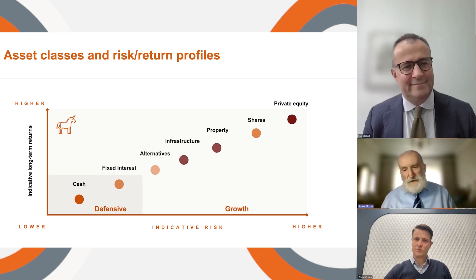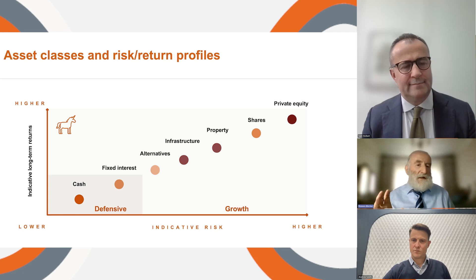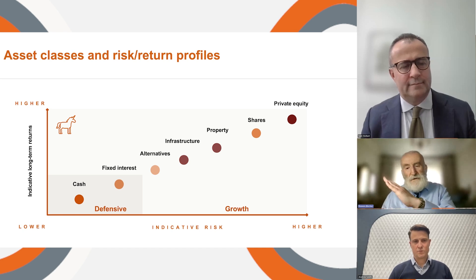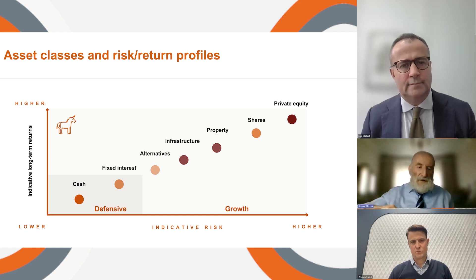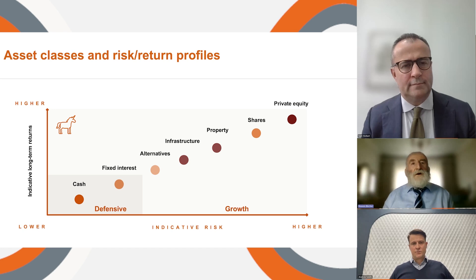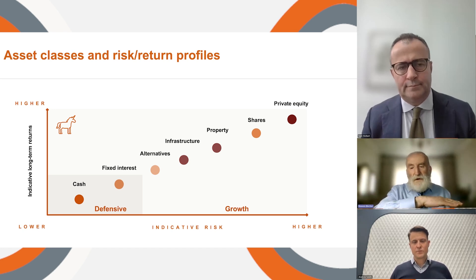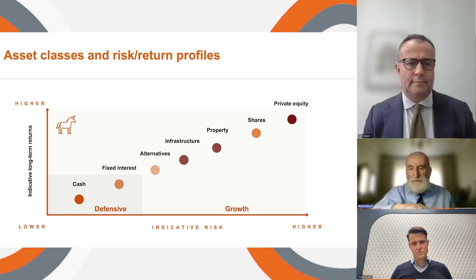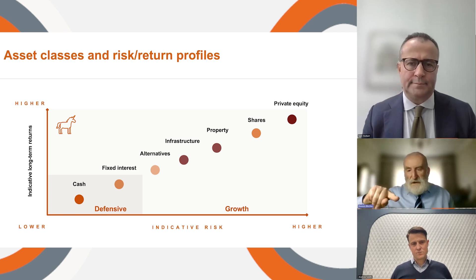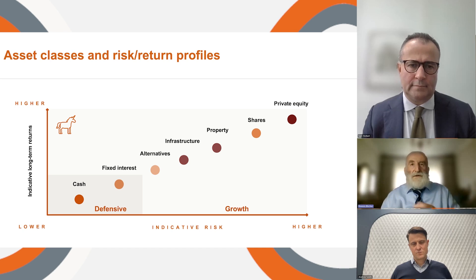The difference between these two main asset classes is that growth asset classes, historically, give the higher return, but in the short term they zigzag more. There's more volatility in the price of those assets over the short term, compared to cash and fixed interest, where there is a lower return but a smoother ride. They don't zigzag as much in terms of price fluctuations as growth asset classes.